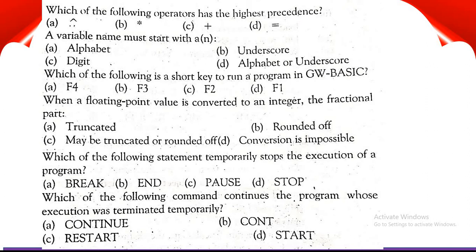Next MCQ is: A variable name must start with option A alphabet, option B underscore, option C digit, option D alphabet or underscore. The correct option is option D alphabet or underscore, because we know that a variable name must start with an alphabet.